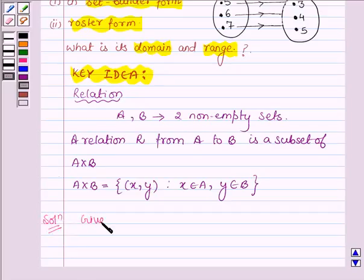And we are given the set P having elements 5, 6 and 7, and the set Q having elements 3, 4 and 5.